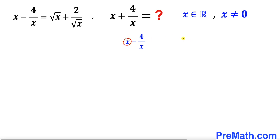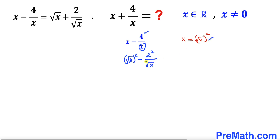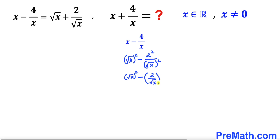Look at this x. x can be written as (square root of x) whole squared. So I can rewrite this expression by replacing x with (√x)² and replacing 4 with 2 squared, and similarly replacing the denominator x with (√x)². So the fraction becomes [(√x)² minus (2/√x)²], and now we can see we have a difference of two squares.